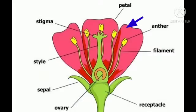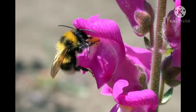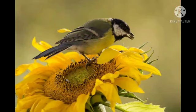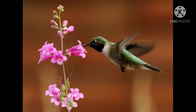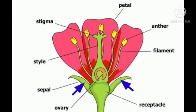Third, petals. Petals are the colorful parts of the flower. They help in attracting insects, birds, and other animals which spread pollen and facilitate sexual reproduction.